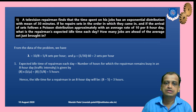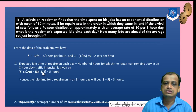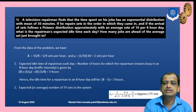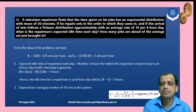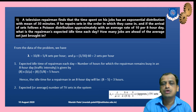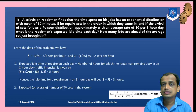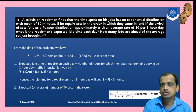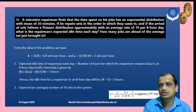For the second part, the average number of TV sets in the system: the formula is Ls = λ/(μ − λ). Putting in the values of λ and μ gives approximately 2 TV sets in the system — meaning one is being repaired and one is waiting in the queue. By remembering the formulas and applying the right criteria, we can easily solve the problem.